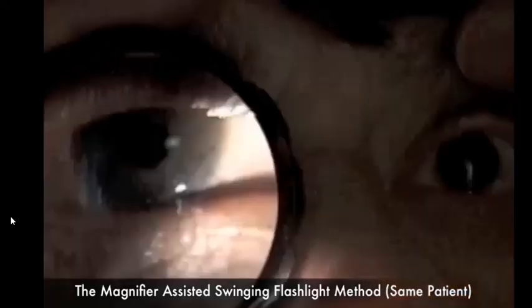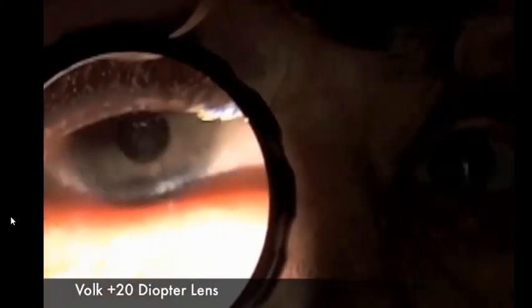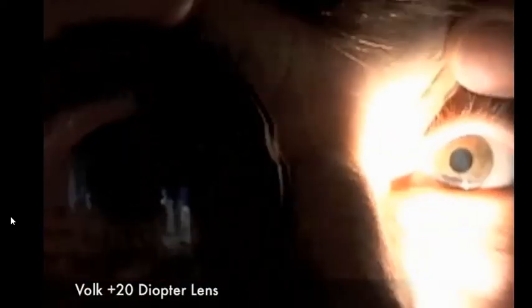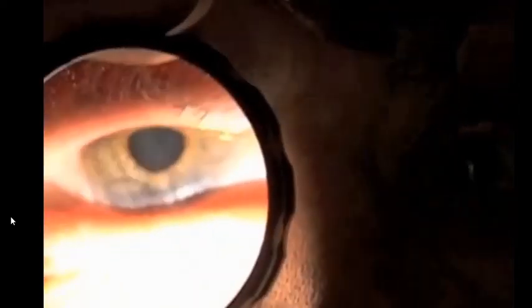The sensitivity of the swinging flashlight method can be increased by using a magnifying lens during the examination. Here, the examiner uses a Volk 20-plus diopter lens for the magnifier-assisted method. The high-plus lens is held in front of the eye without touching the eye. The lens is always held in front of the eye chosen for observation. The exam is then conducted in the same way as previously described.